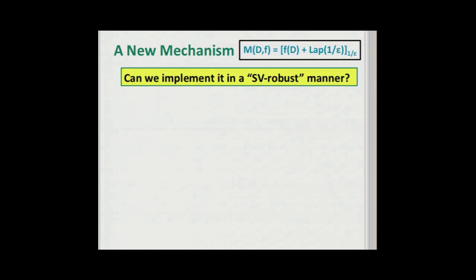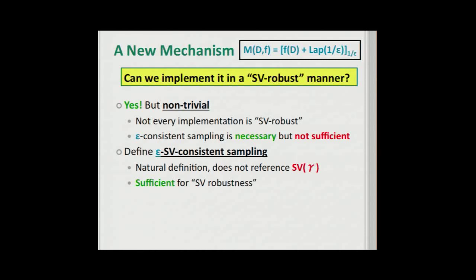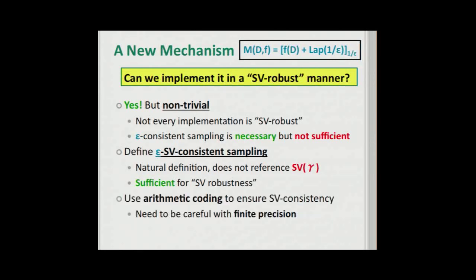The question becomes: can we implement this in an SV-robust manner? The answer is yes, but it's highly non-trivial — this was pretty much the bulk of our technical work. Not every implementation is SV-robust, meaning epsilon consistent sampling is necessary but not sufficient to handle Santha-Vazirani sources. This leads us to define epsilon SV-consistent sampling — a natural definition that doesn't reference SV distributions directly, and we show it's sufficient for SV robustness. To ensure SV consistency, we use arithmetic coding, being very careful with finite precision.